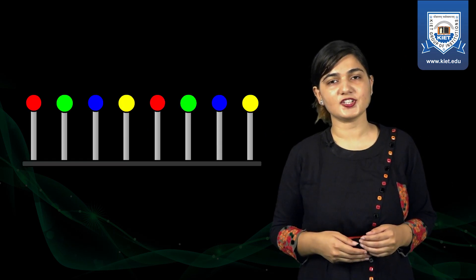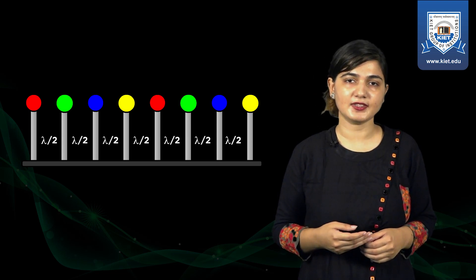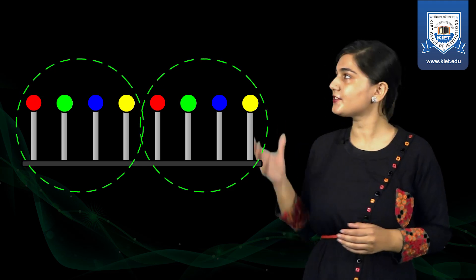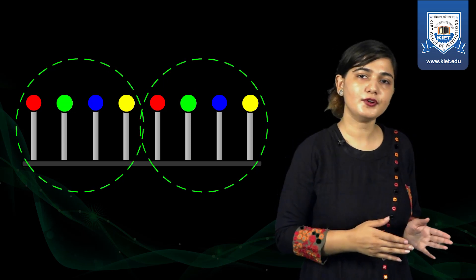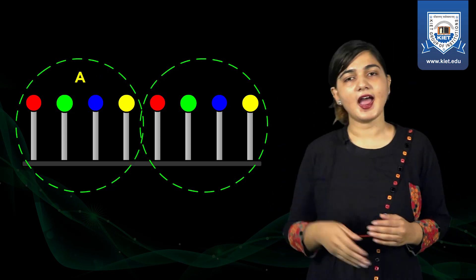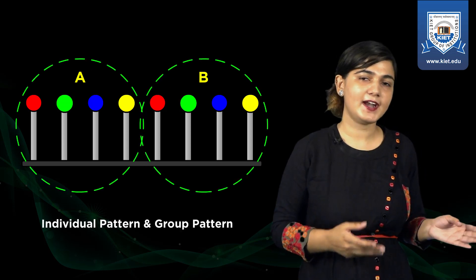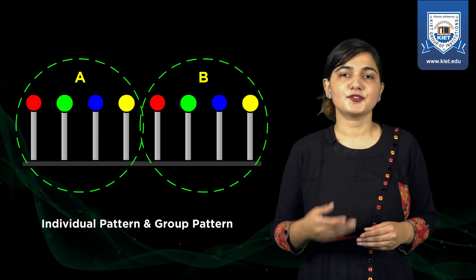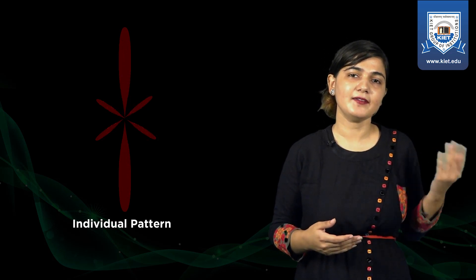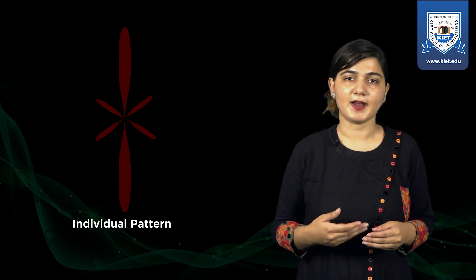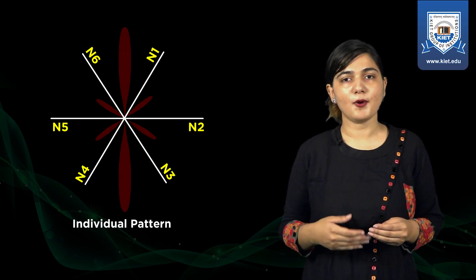Now we will find out the final radiation pattern of an eight point antenna array which are lambda/2 distance apart and having zero phase between them. I am clubbing the first four antennas and the last four antennas together — antennas 1, 2, 3, 4 as group A and antennas 5, 6, 7, 8 as group B. For the individual pattern, I use the radiation pattern of group A from the previous four antenna array result, which has six nulls.